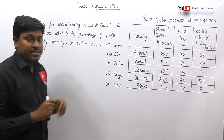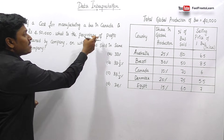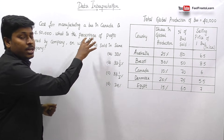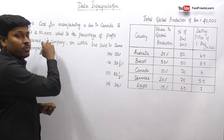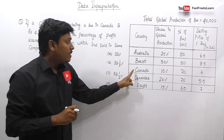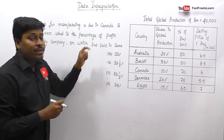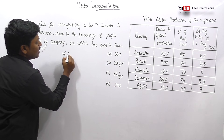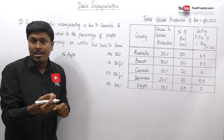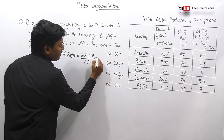Question number 1: If the cost of manufacturing a bus in Canada is four lakh fifty thousand, what is the percentage of profit earned by the company on which the bus is sold? They are talking about Canada. The cost of manufacturing is 4,50,000, and Canada is selling a single bus for 6 lakh. We need to find the profit percentage. The formula is: profit percentage = (selling price minus cost price) divided by cost price, into 100.